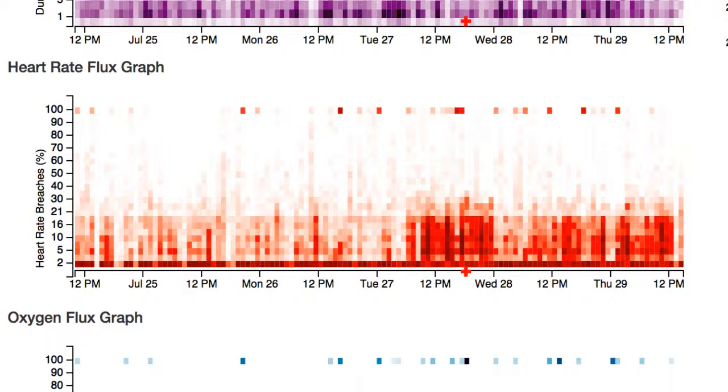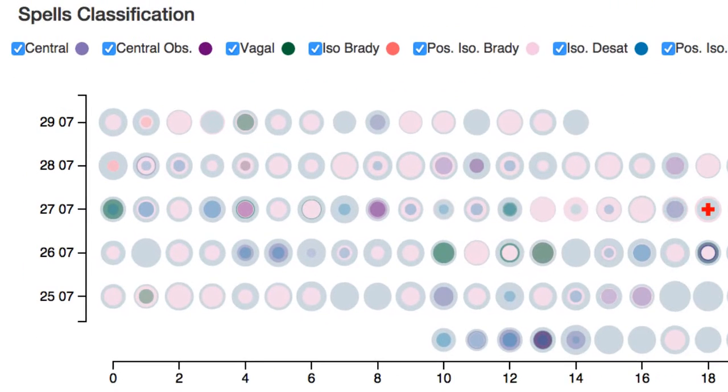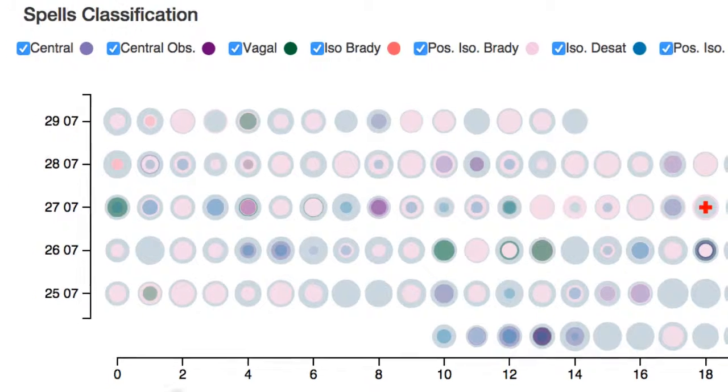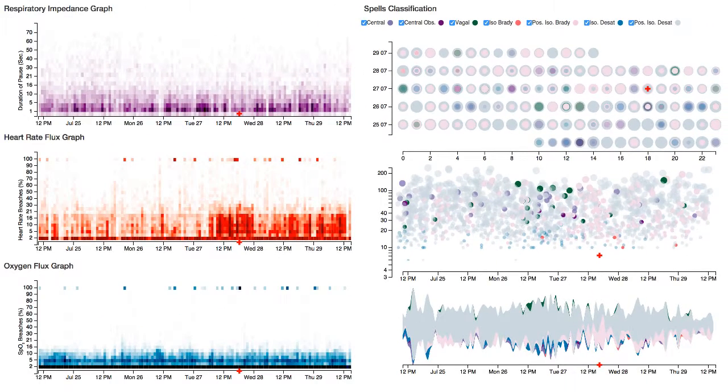We also present a unique representation of the bubble chart, named the sequence chart, for exploring high-level sequences in algorithm-generated event classifications.